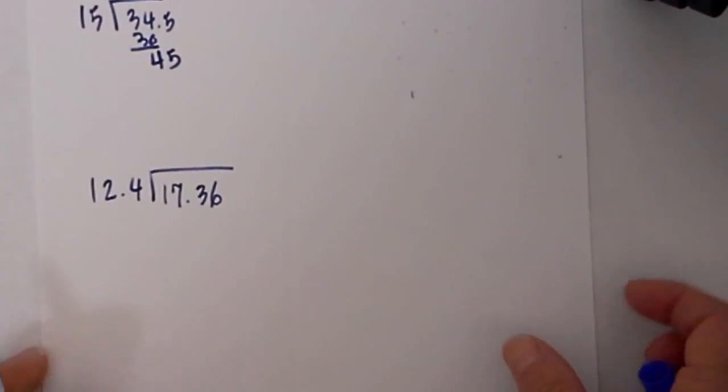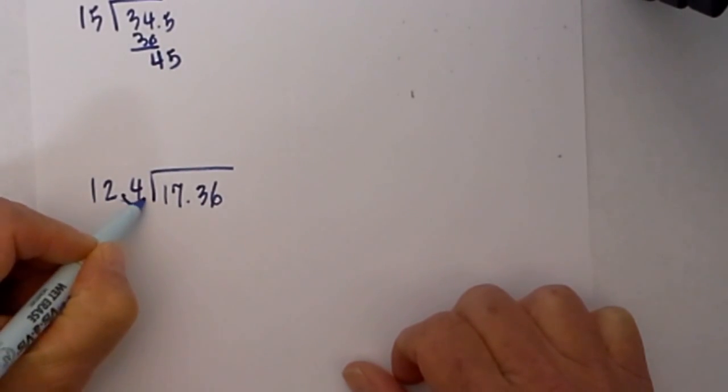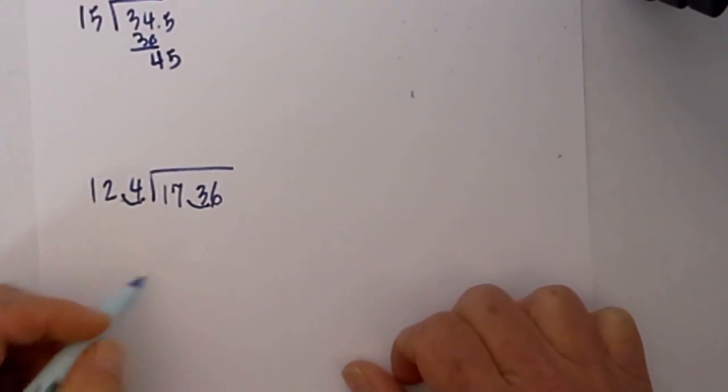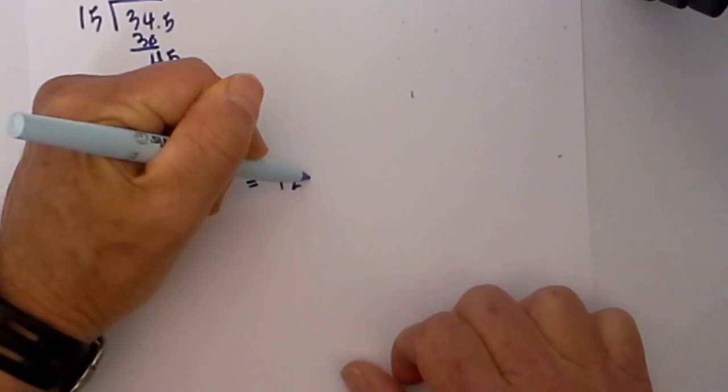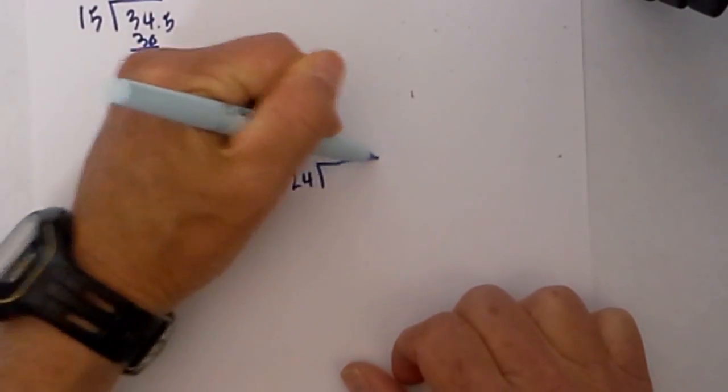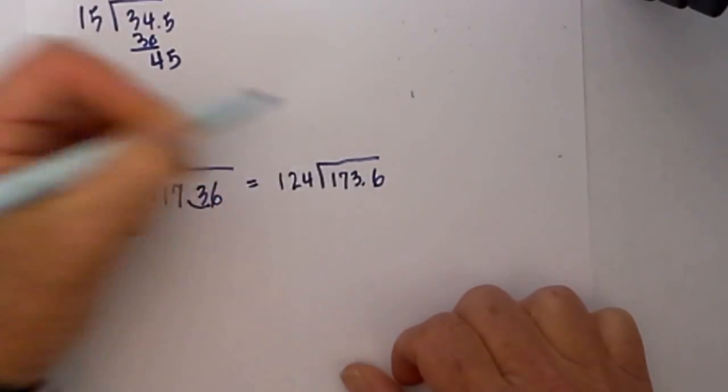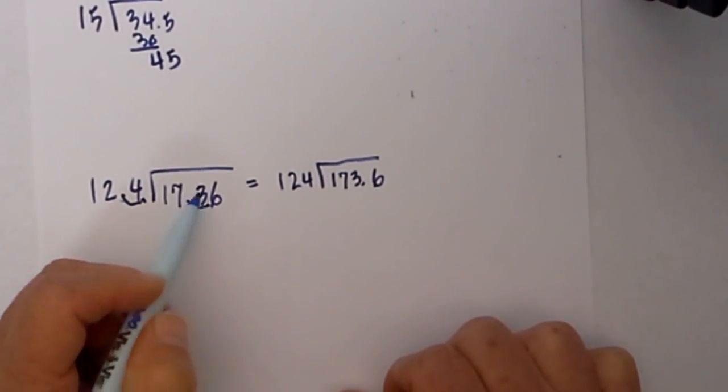Again, we have a decimal on the outside, so we're going to move it one to the right. What I do on the outside I do on the inside, and that becomes 173.6. You don't have to rewrite it, but I've found it helps eliminate mistakes. So now I have 173.6 because I've moved the decimal one place on the outside, so one place on the inside.